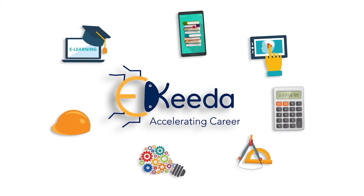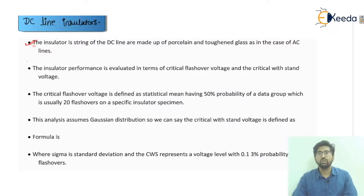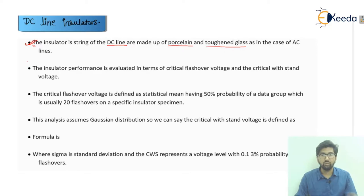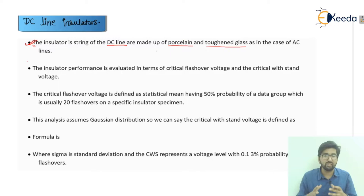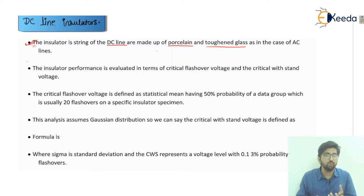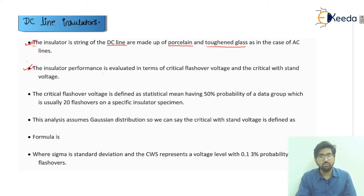So what is actually an insulator? The insulator string of the DC line is made up of porcelain and toughened glass. As in the case of the AC line, the same kind of insulators we were using for AC lines can be used for DC lines also. So that is made up of porcelain and toughened glass, same way, for DC line insulators also.